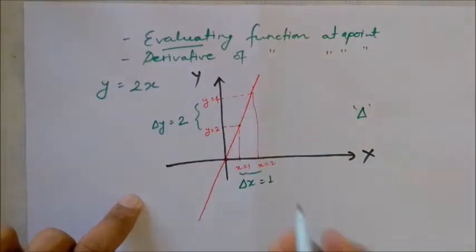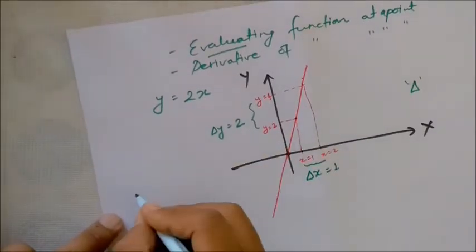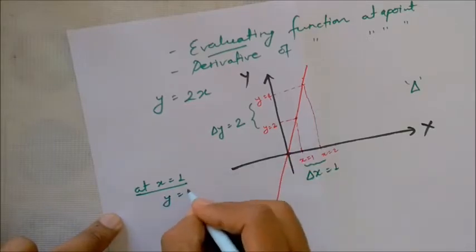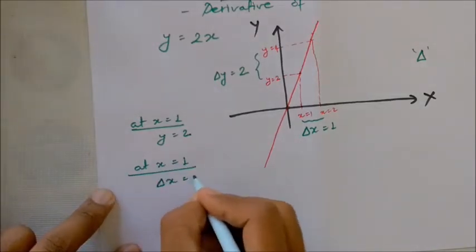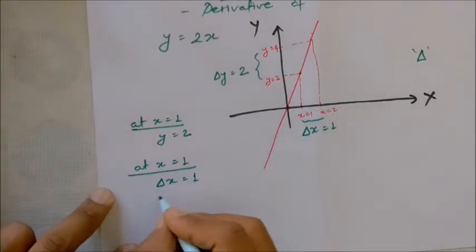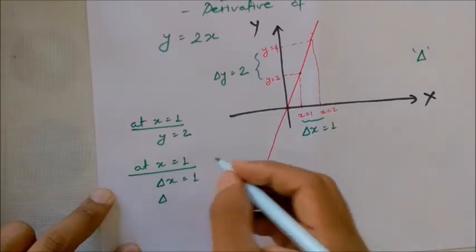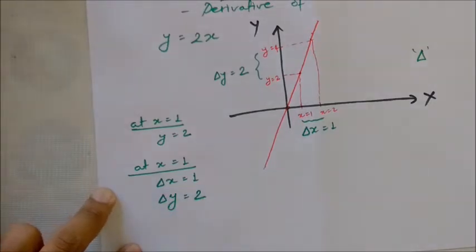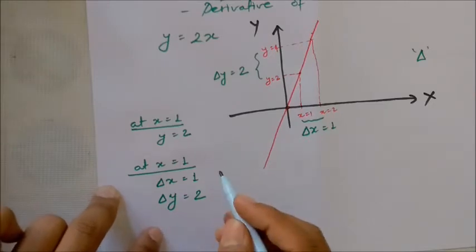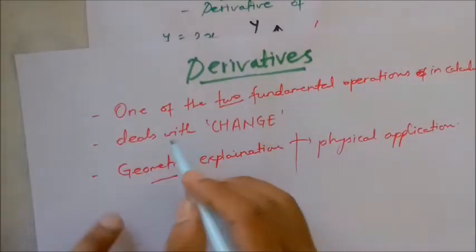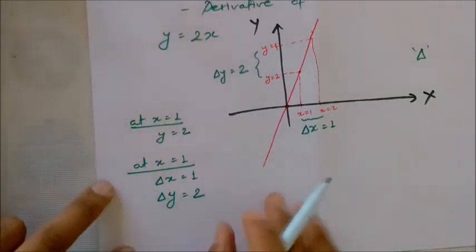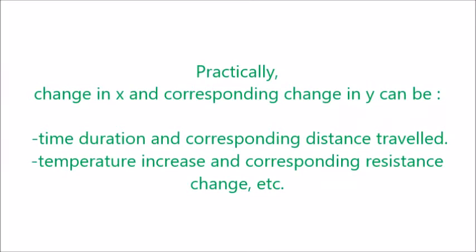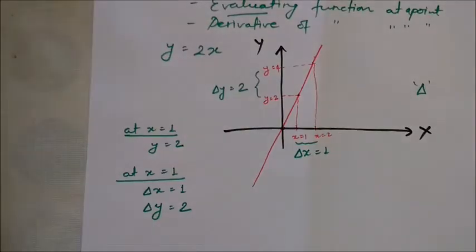Evaluate the function at x equals 1: y equals 2. At x equals 2: y value changes. Change in x is 1, and the corresponding change in y — delta y — equals 2. This is the change in x, and that relates to the derivative at that point.